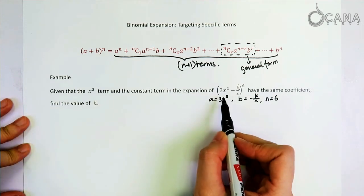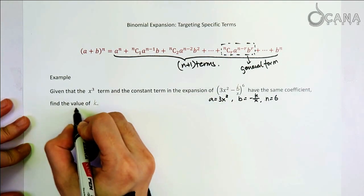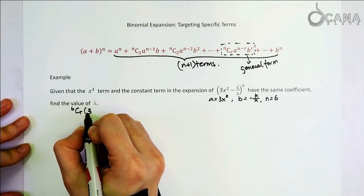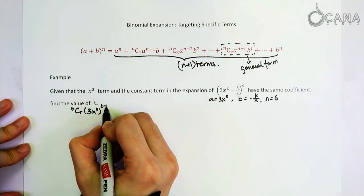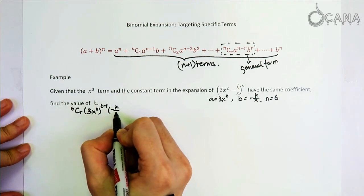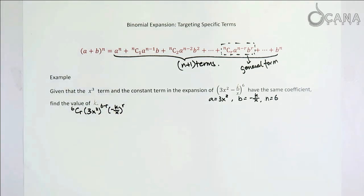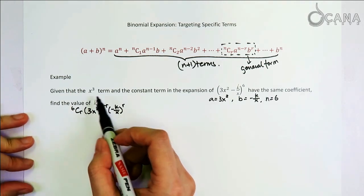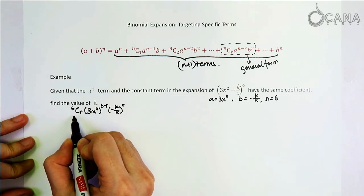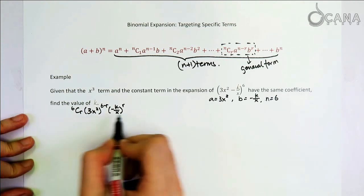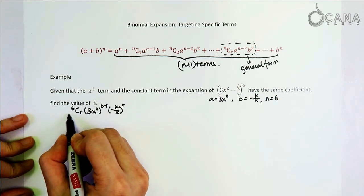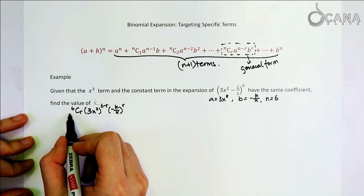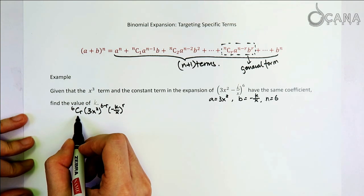That means any term in this expansion should be of this form: 6 choose r, and then 3x squared to the power of 6 minus r times negative k over x to the power of r. And the next thing that we're concerned about is the power of x. So let's try to express the power of x in this general form first. There are three things multiplied together. From the first thing, 6 choose r, there's no x involved. So we know that this 6 choose r doesn't contribute anything to the power of x.